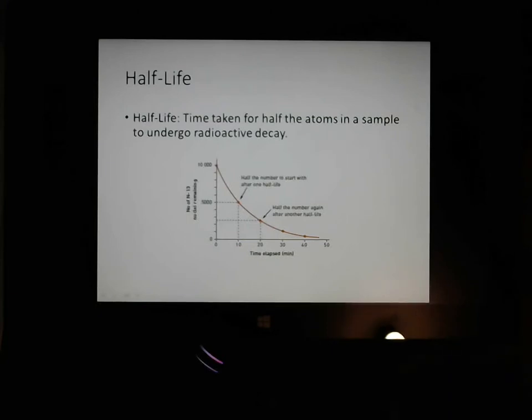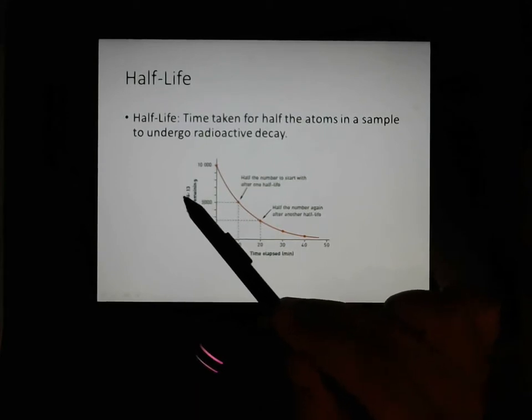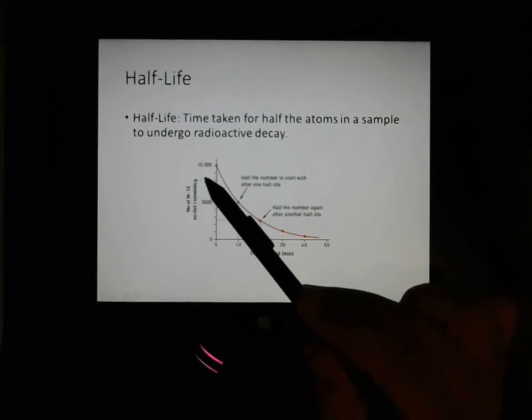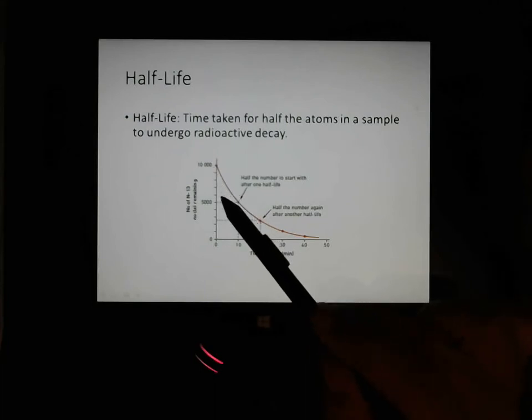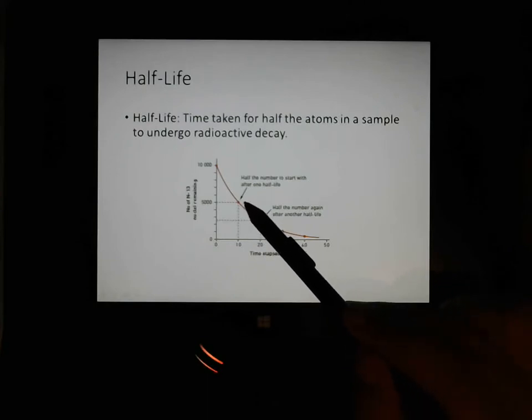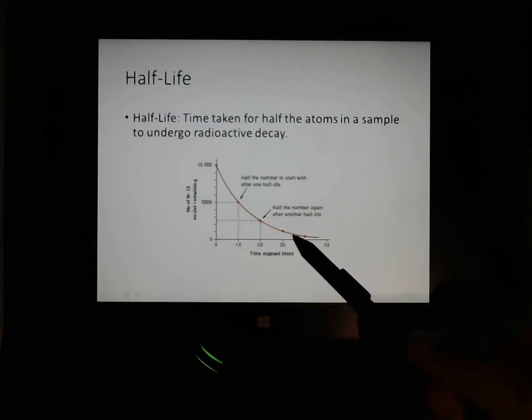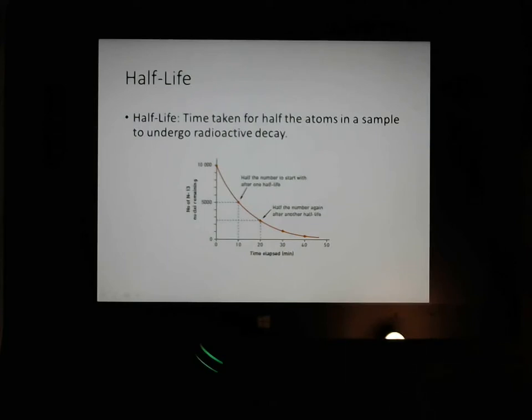And so here's the image from the book. As you can see here, we have number of N13, nitrogen-13 nuclei remaining, 10,000, but if it starts at 10,000, the half-life would have to be when it gets to 5,000, which we can see there is 10 minutes. After 20 minutes, it has gone from half of that down to 2,500. After 10 minutes, half of that down to 1,250. Half of that, after 10 minutes, down to 600-something. And this would just keep petering out slowly, slowly, slowly.